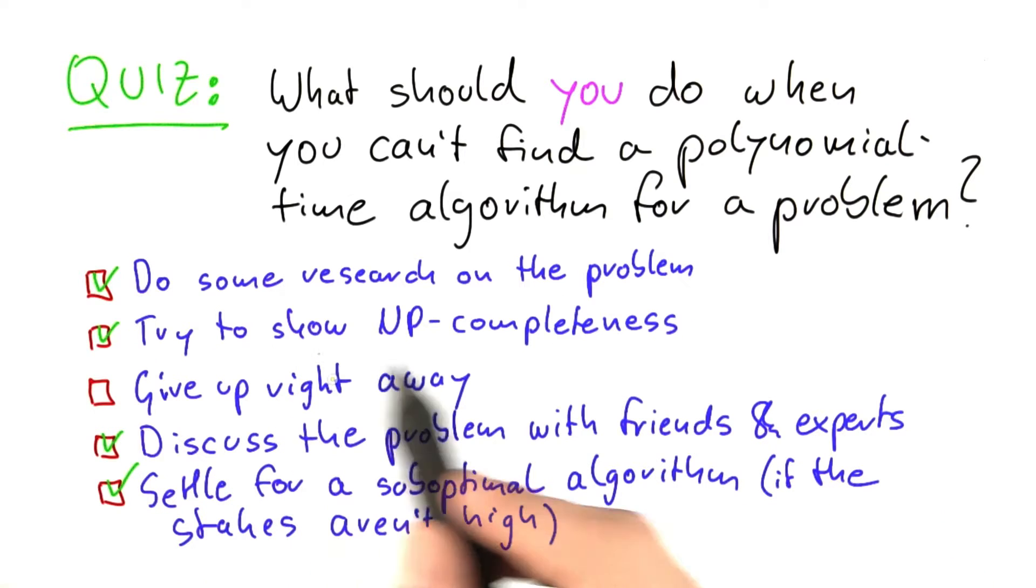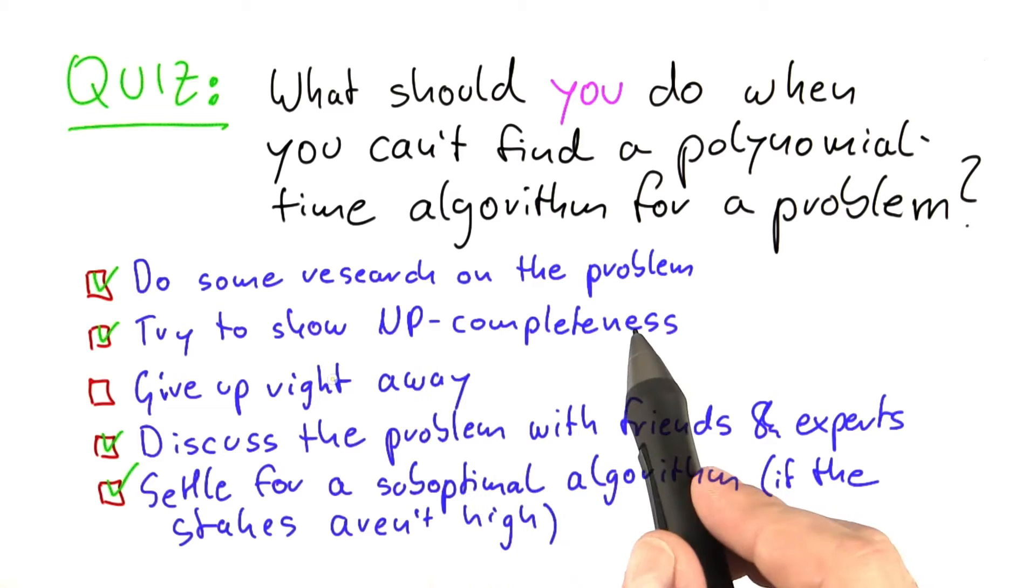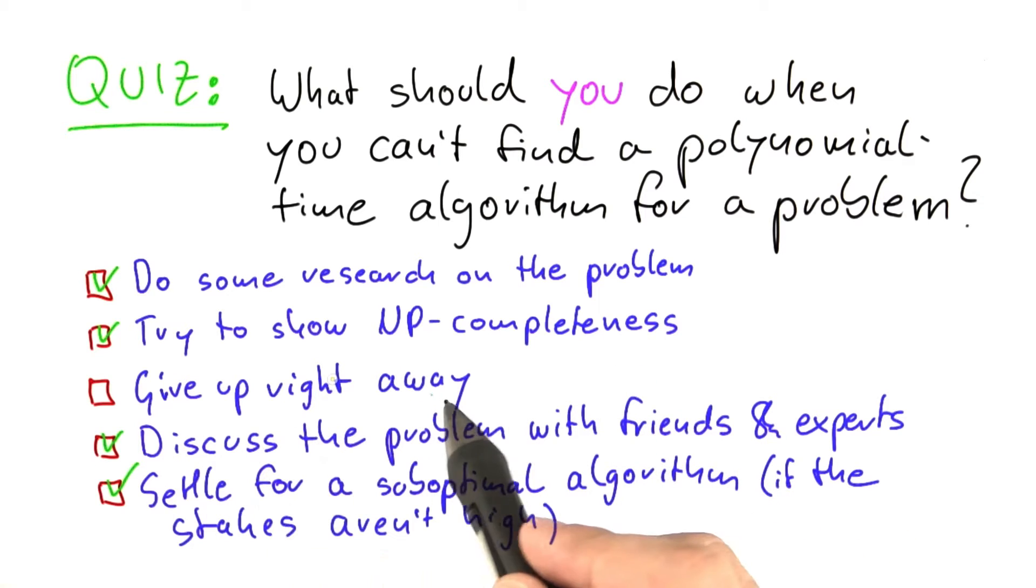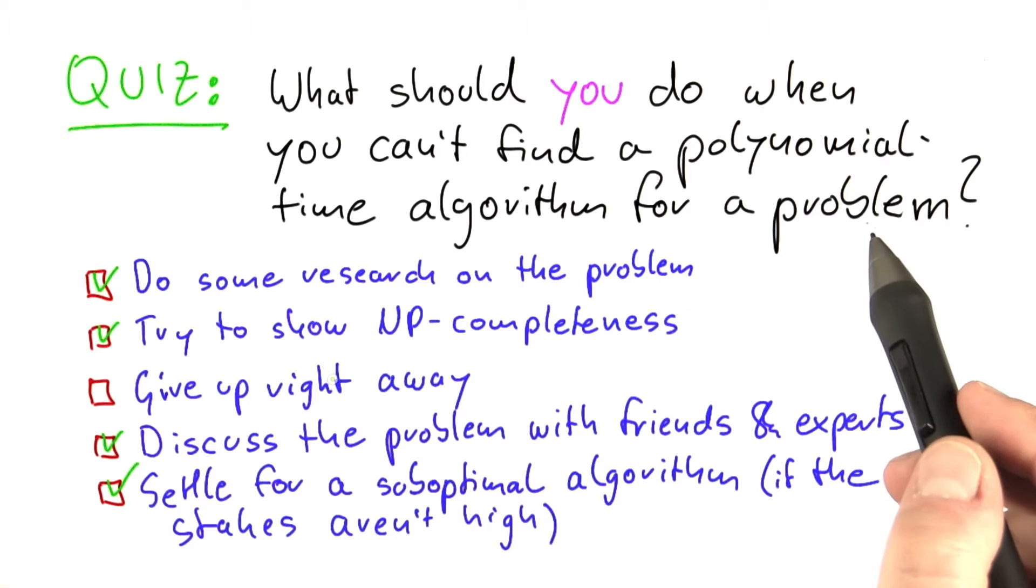Of course you can also try to show NP completeness for your problem because if you manage to show this then you know your problem is going to be hard. This is not an excuse to give up right away but you basically just know what you're dealing with.